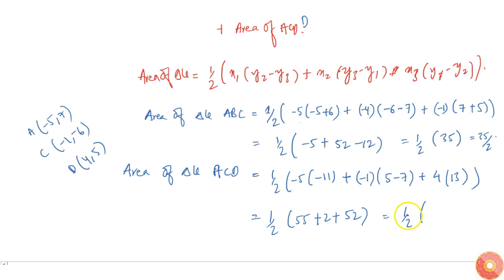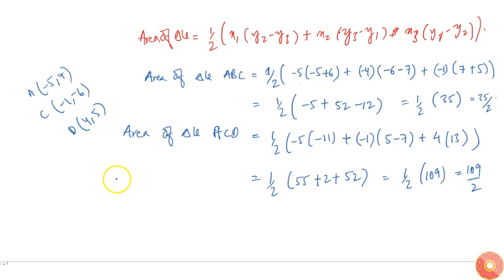Now this whole thing, total area I mean area of ABCD, so area of ABCD is equal to 35 by 2 plus 109 by 2 which will be equal to 144 by 2, that is 72 square units.